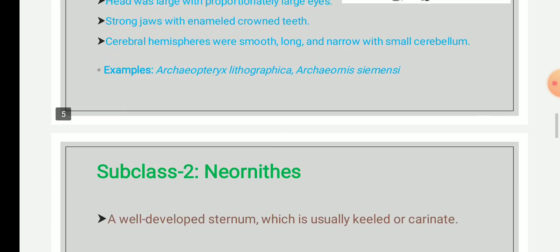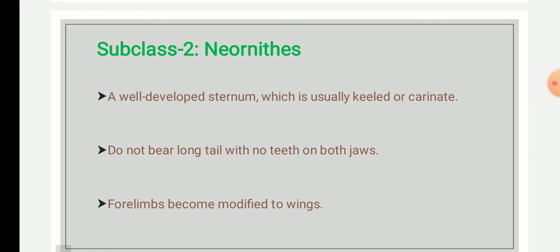The next is subclass Neornithes. All modern birds present today belong to subclass Neornithes, which contains about 10,000 known living species throughout the world. This subclass first appeared during the Cretaceous period of the Mesozoic era, and also includes some super orders and orders that are now extinct.